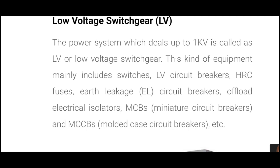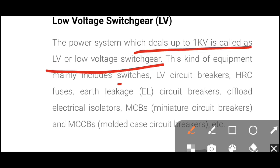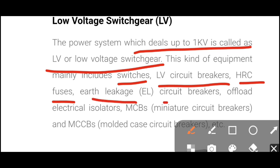First, we discuss low voltage switchgear. The power system which deals up to 1kV is called low voltage switchgear. This kind of equipment mainly includes switches, low voltage circuit breakers, HRC fuses, earth leakage circuit breakers, off-load electrical isolators, and miniature circuit breakers — also known as MCBs — which are commonly used in our homes.